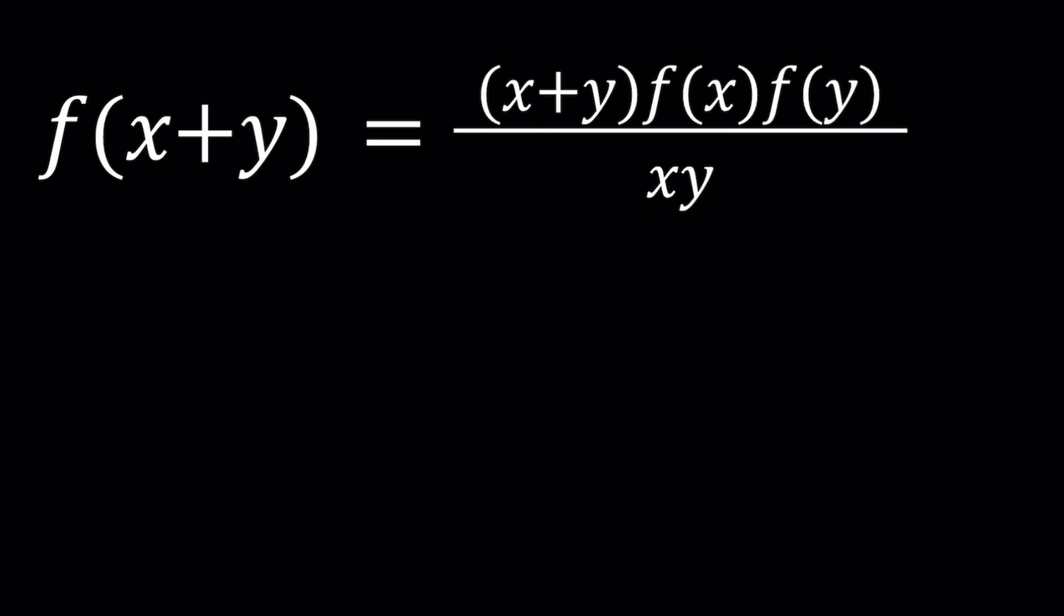By solving this equation we're going to find a function in the form of f(x) that will satisfy this equation. With functional equations there's not a set method but a number of different strategies. Those strategies include replacing x and y with different numbers, especially the special numbers include 0, 1, and negative 1. Sometimes we tend to substitute something like y equals x.